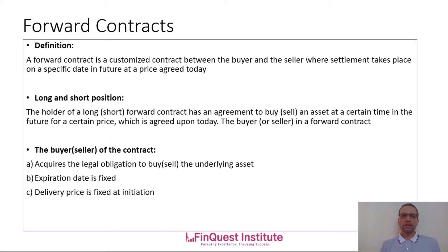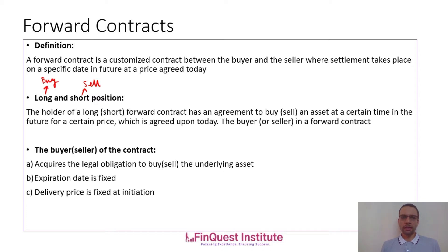A quick recap of forward contracts. A forward contract is a customized transaction between two counterparties whereby they agree to buy or sell a certain asset at a pre-specified time and a pre-specified price in the future. There is a long and a short position — long is synonymous to a buy and short to a sell. This is a commitment, so both counterparties have to abide by their side of the trade. Unlike an option, once you enter into a forward contract that commitment has to be completed.